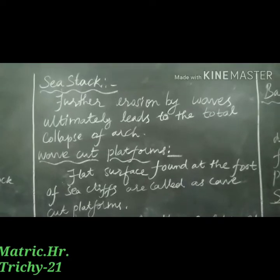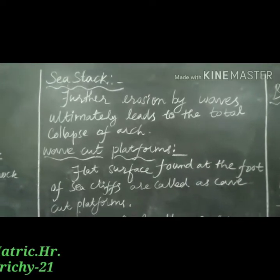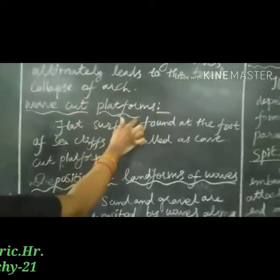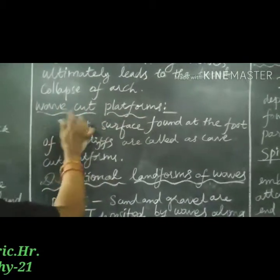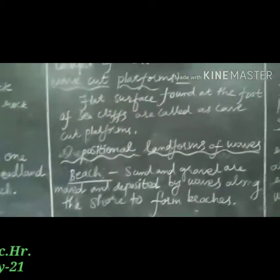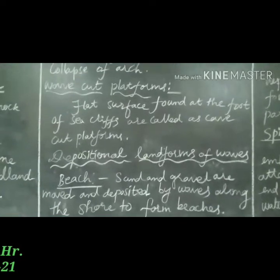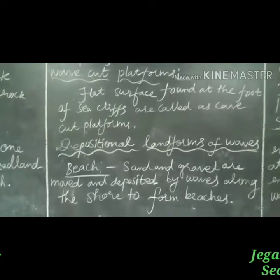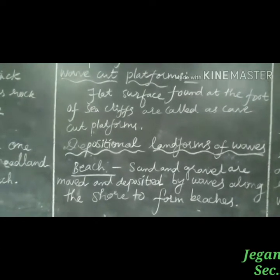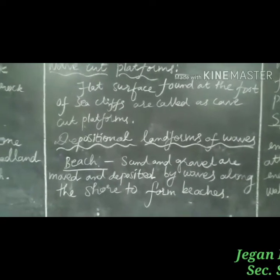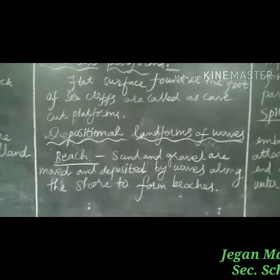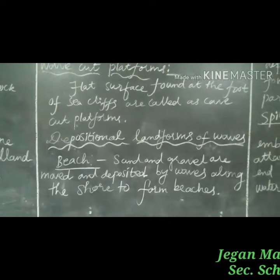For example, the Old Man of Hoy. Next is wave-cut platforms. Flat surfaces found at the foot of sea cliffs are called wave-cut platforms, also referred to as the wave-cut bench.